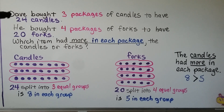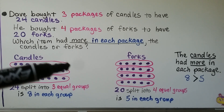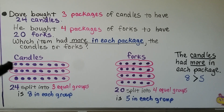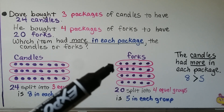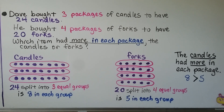Dave bought three packages of candles to have 24 candles, and four packages of forks to have 20 forks. Which item had more in each package, the candles or forks? We make 24 counters and draw them into three equal groups — 24 split into three equal groups is eight in each group. For the four packages of forks with 20 forks, we split 20 into four equal groups — that's five in each group. The candles have more in each package. Eight is greater than five, so the answer is candles.